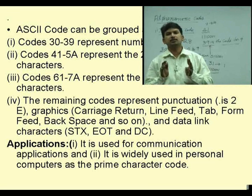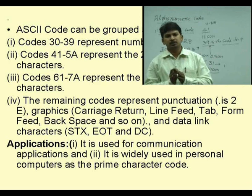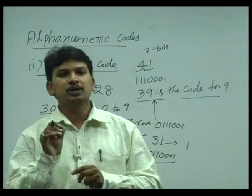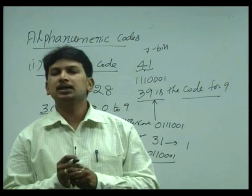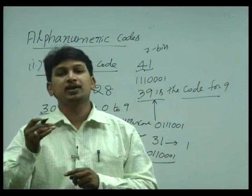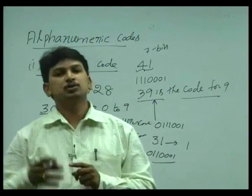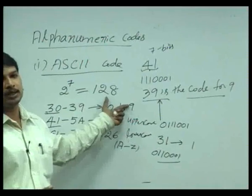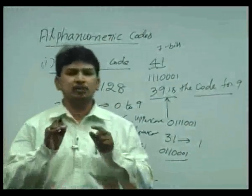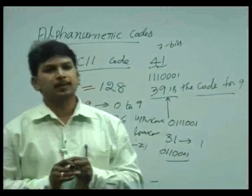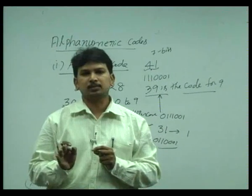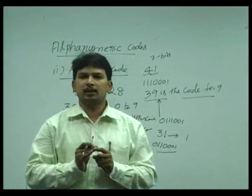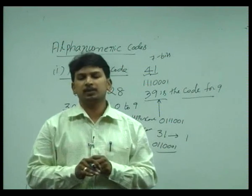ASCII code stands for American Standard Code for Information Interchange. It is a 7-bit code; each code is represented by 7 bits. There are 128 different codes available. We get 128 because 2 to the power of 7 is equal to 128, and all 128 codes have been defined. It is a perfect code for personal computers and for data communication applications.